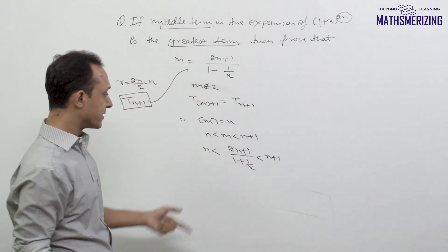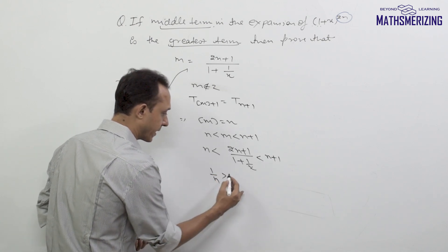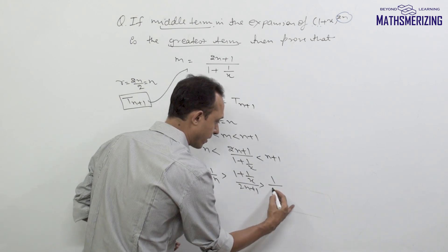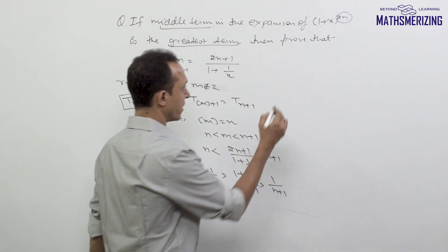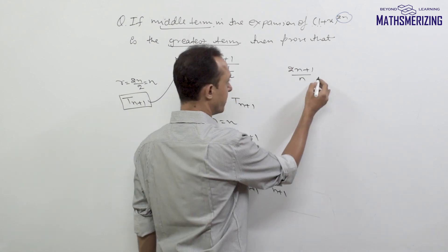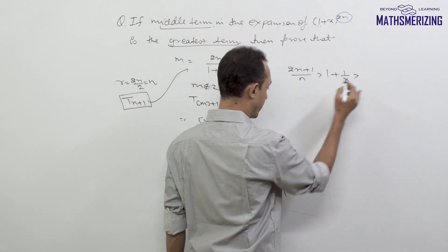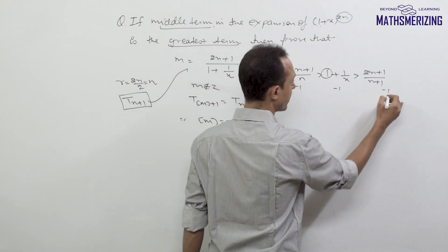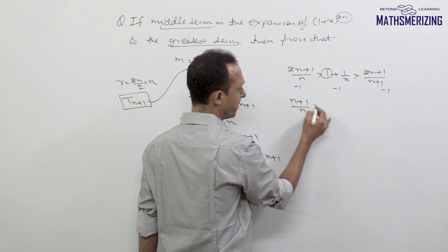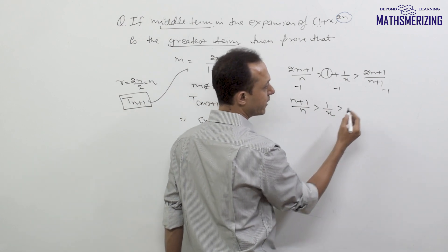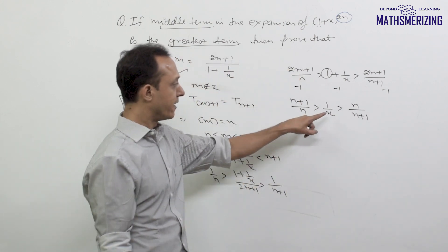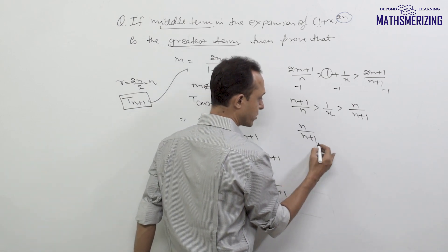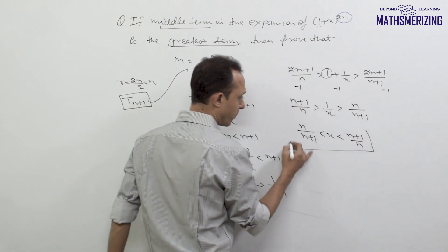Taking the reciprocal reverses the sign, so we get: 1/(n+1) < (1 + 1/x)/(2n+1) < 1/n. Multiplying through by (2n+1) gives (2n+1)/(n+1) < 1 + 1/x < (2n+1)/n. Subtracting 1 from all parts: n/(n+1) < 1/x < (n+1)/n. Taking the reciprocal again (both numbers are positive), we get n/(n+1) < x < (n+1)/n.